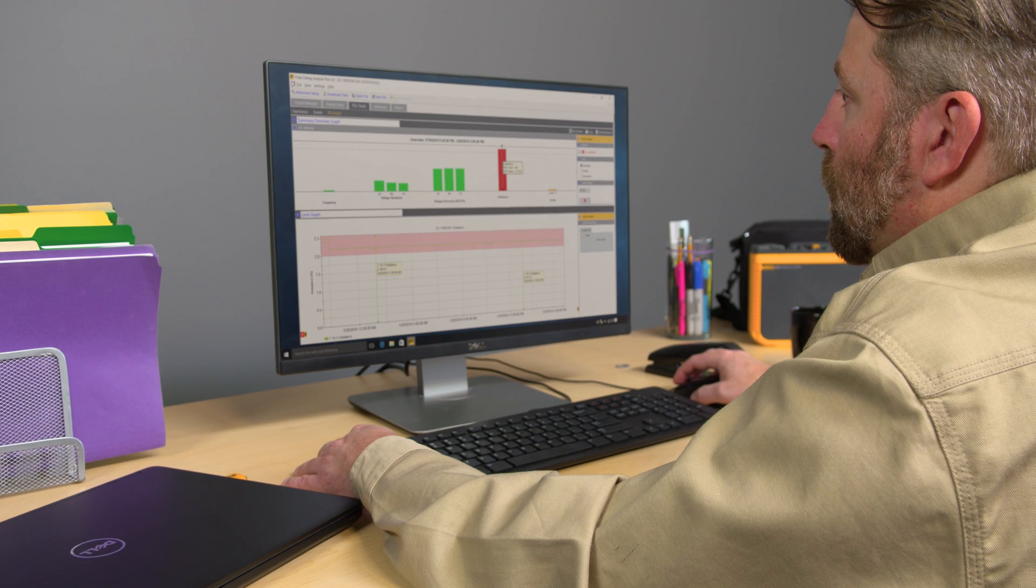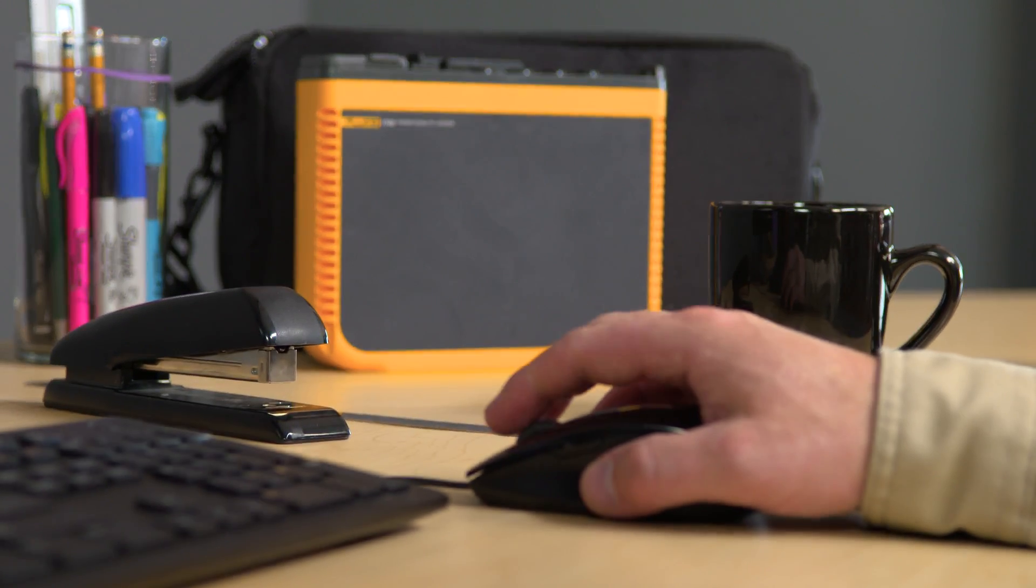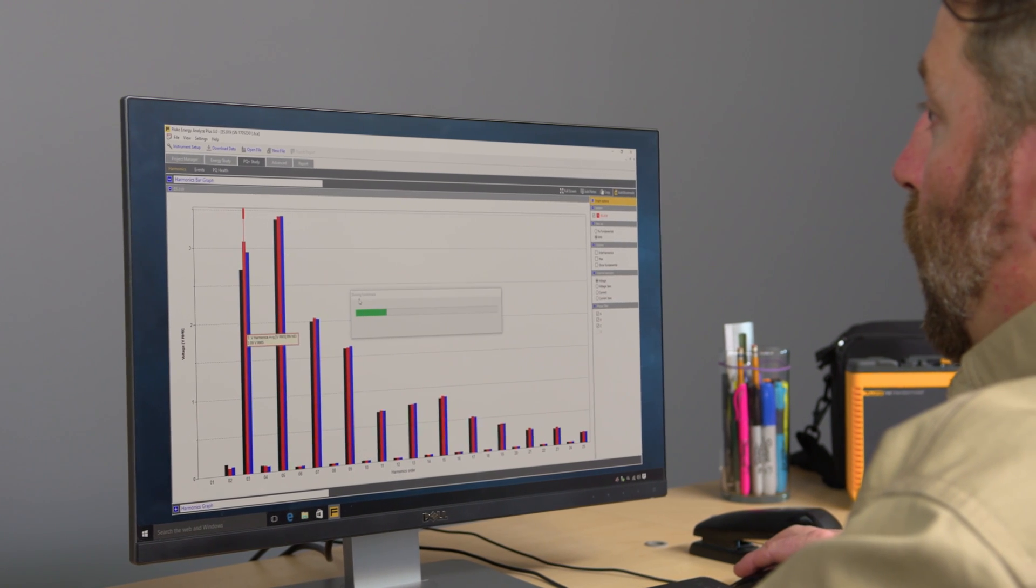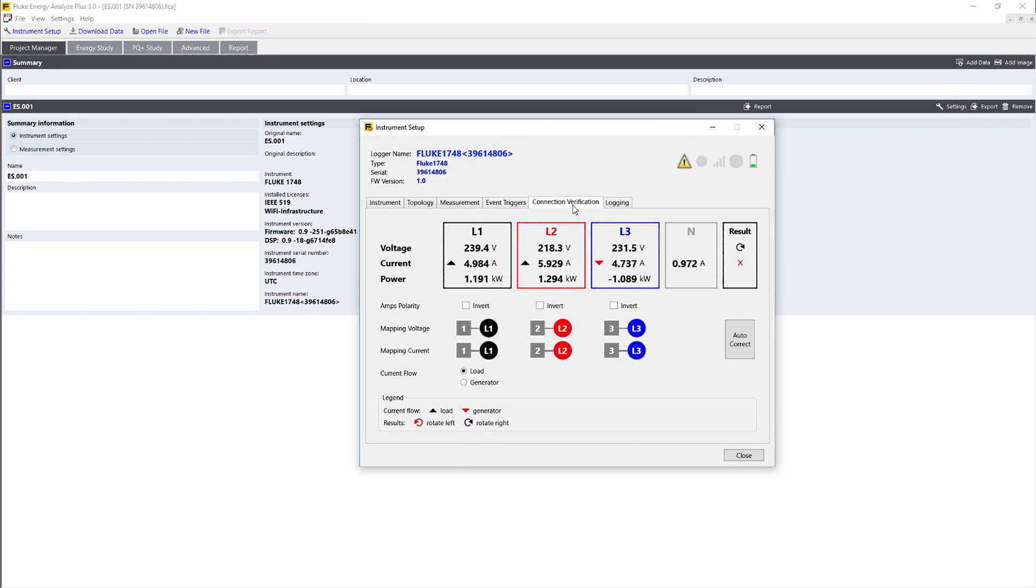Use the included Energy Analyze Plus software to manage all the setup and operational parameters, including the Advanced Intelligent Measurement Verification function. The Verification function displays connection errors and allows you to correct them digitally with the press of a button, all without removing test probes.